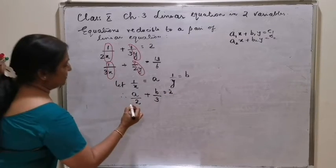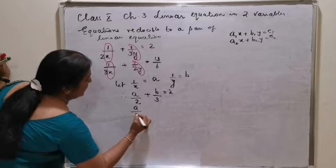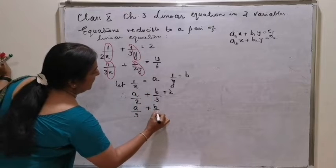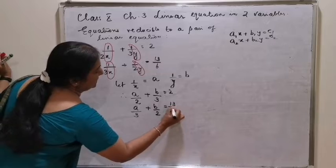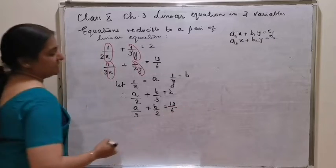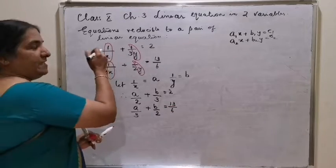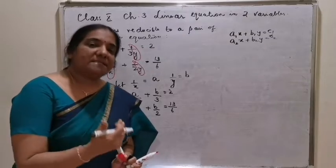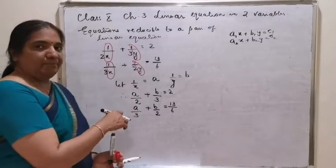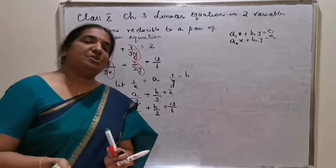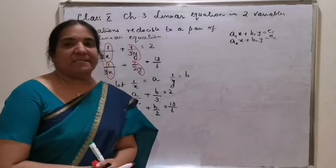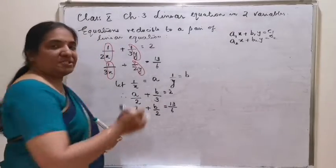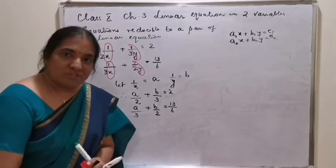The second equation: a by 3 plus b by 2 is equal to 13 by 6. The variables in the question, that is x and y, are converted into a and b. In the final step, we will substitute back and get the answers of x and y. Now, these two equations you will solve.